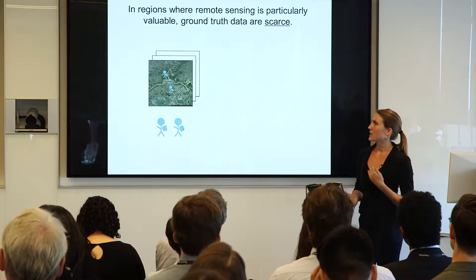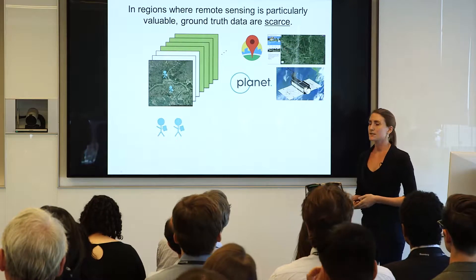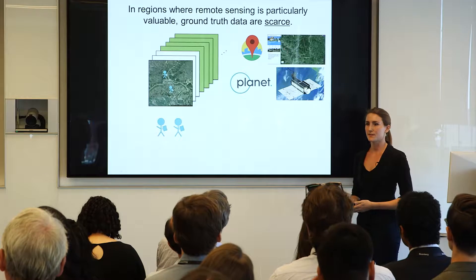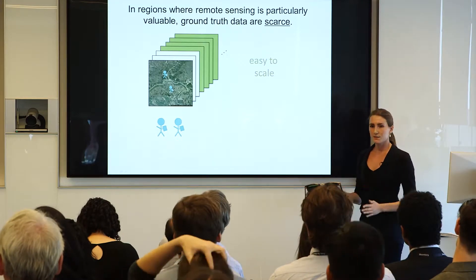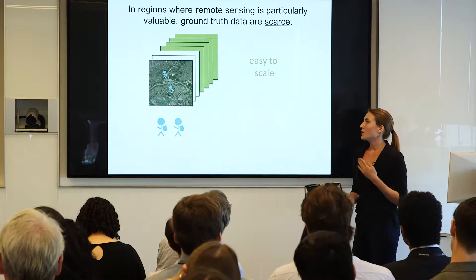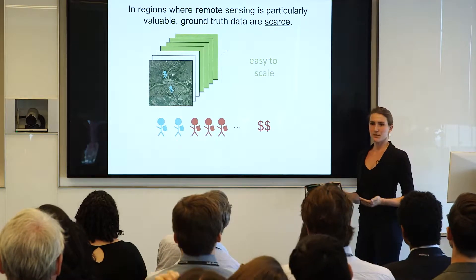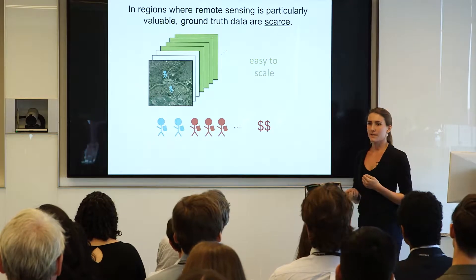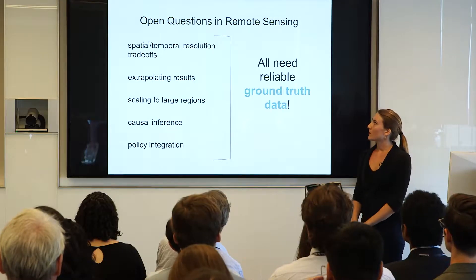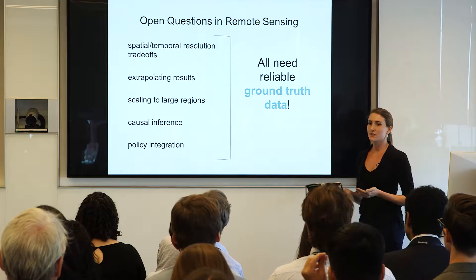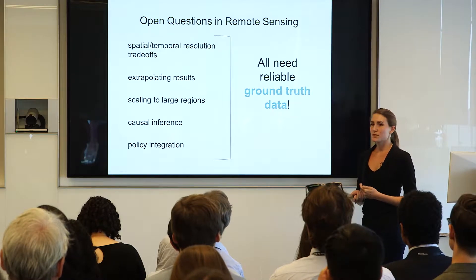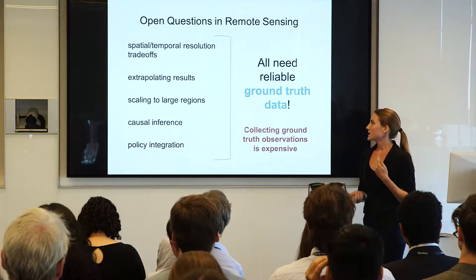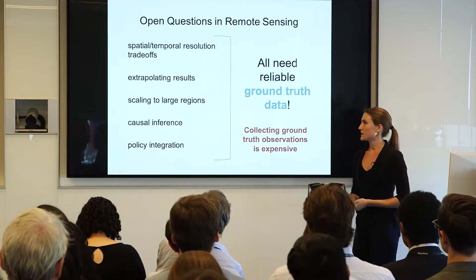We can get more images fairly easily — there are companies that devote an enormous amount of effort into capturing these images and making them publicly available to researchers. So images are not the bottleneck in scaling up. But if we want more observations, we have to send more people on the ground, and that's time and money. This is really the bottleneck in learning good predictors. My collaborators and I identified things we'd really like to do with remote sensing data, all of which rely on having good ground truth data — and that's the expensive part.